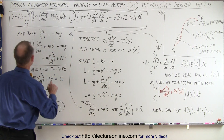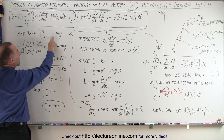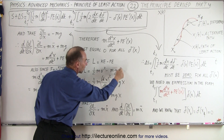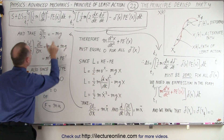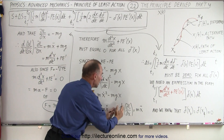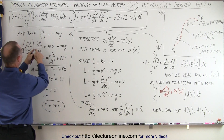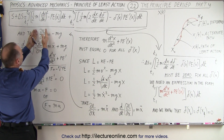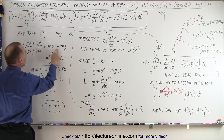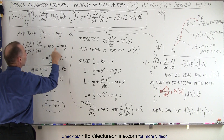Now we take the partial of L with respect to x, which is equal to minus mg — because taking the derivative of minus mgx with respect to x gives minus mg. Then, if we take the d/dt of the partial derivative of the Lagrangian with respect to x-dot, and subtract from that the partial of the Lagrangian with respect to x, we get m·x-double-dot plus mg, since we're subtracting the minus mg, giving us a plus mg.